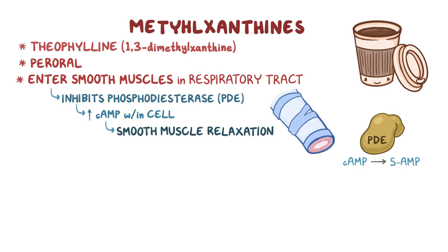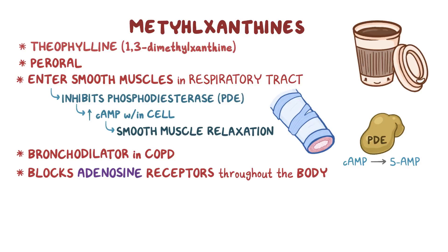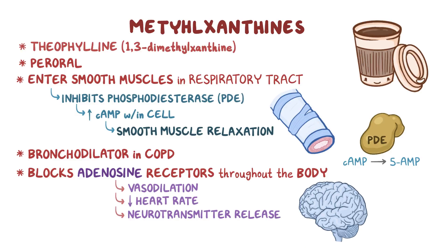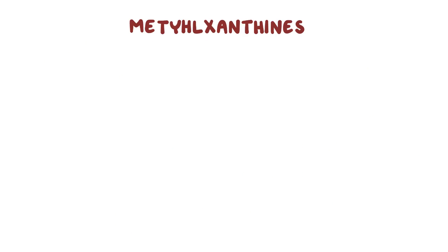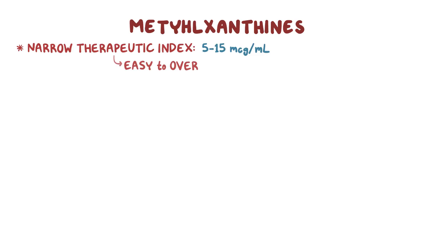Besides its use in asthma, theophylline is also used as a bronchodilator in COPD. Just like coffee, theophylline also blocks adenosine receptors throughout the body. Adenosine is a mediator that causes vasodilation, decreased heart rate, and neurotransmitter release in the brain, but increased smooth muscle contraction in the respiratory tract. This mechanism could also explain some of theophylline's bronchodilating effect. However, theophylline has a very narrow therapeutic index of 5 to 15 micrograms per milliliter, so it's very easy to overdose.